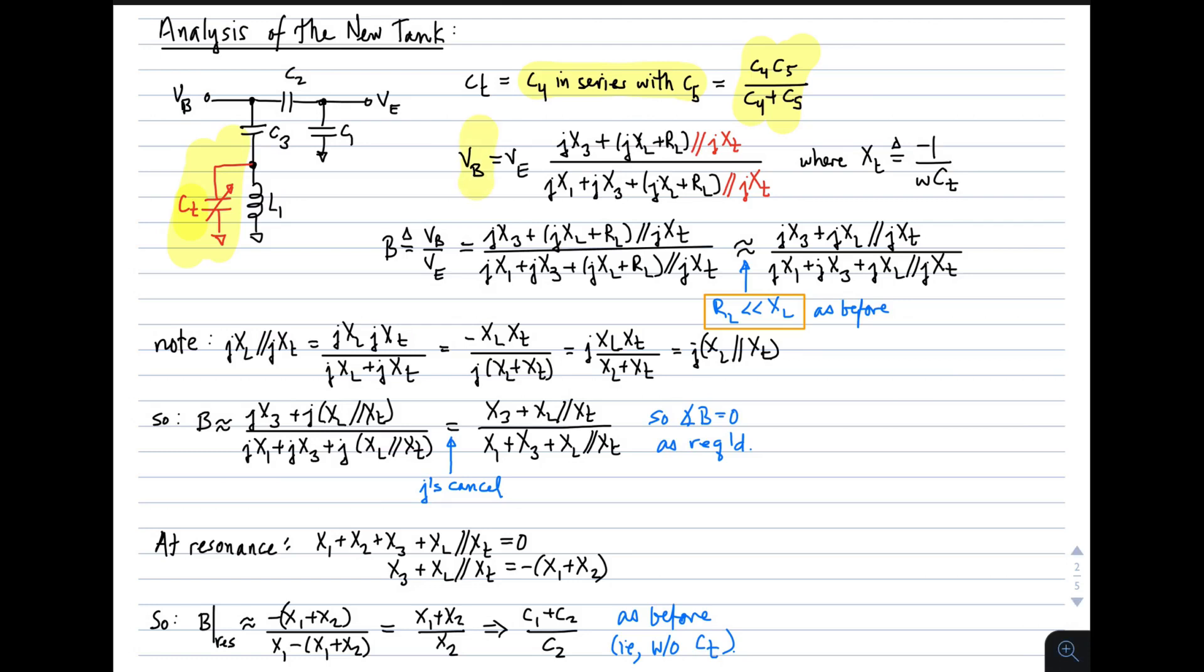The relationship between V sub B and V sub E in this case is again given by a voltage divider, but now the voltage divider has this modified term in the numerator and denominator, where I'm using the notation that X sub T represents the reactance of the tuning capacitance, that's minus 1 over omega CT. So the voltage gain of the tank, given by VB over V sub E, is given by this expression. We apply the same assumption as before, that R sub L, the series resistance of the inductor, is much less than its reactance, and we get this simplified expression.